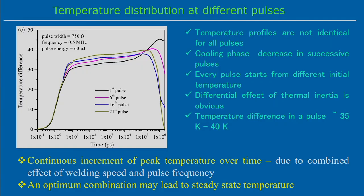Continuous increment of peak temperature over time is due to the combined effect of welding speed and pulse frequency. If welding speed is very small, there is a chance of pulse overlapping; if very high, the temperature distribution changes. An optimum combination of linear speed and pulse frequency may lead to a steady state temperature distribution — meaning individual pulses approach identical temperature distributions.